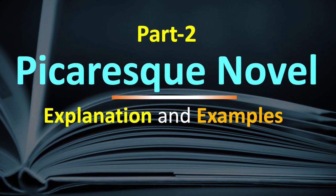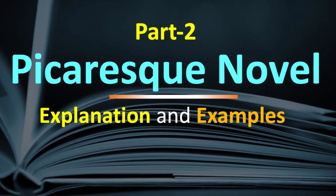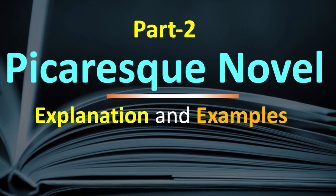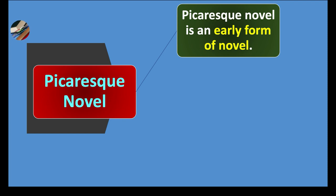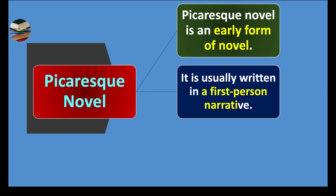Part 2: Picaresque novel — explanation and examples. Picaresque novel is an early form of novel. We trace its origin in the early form of novel writing.